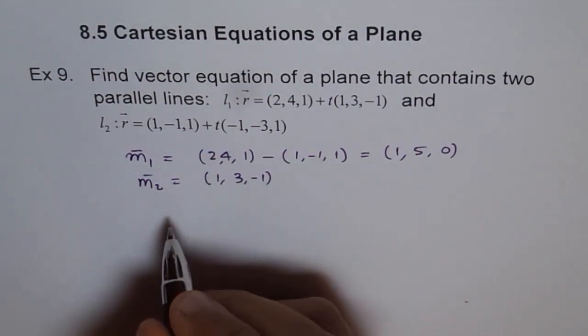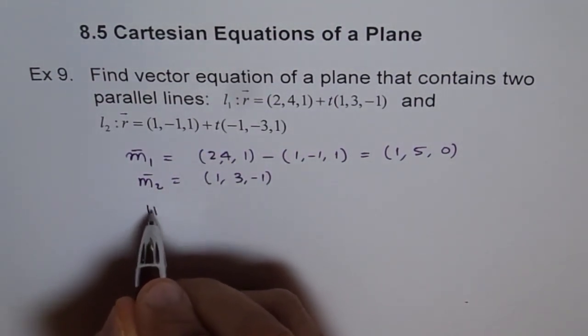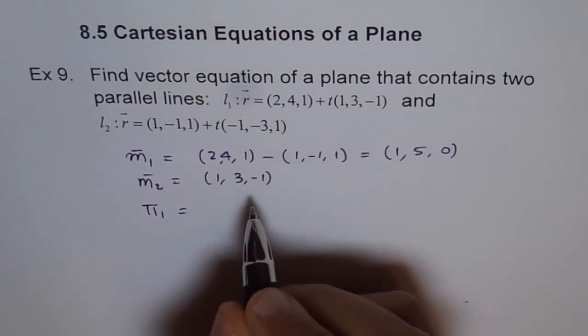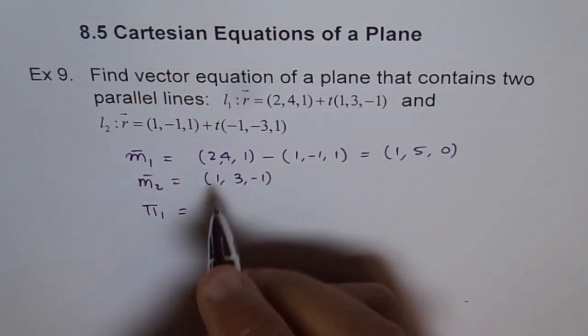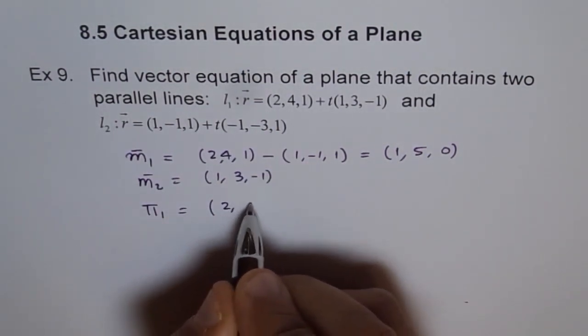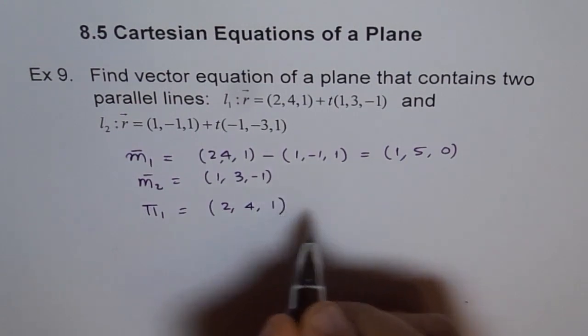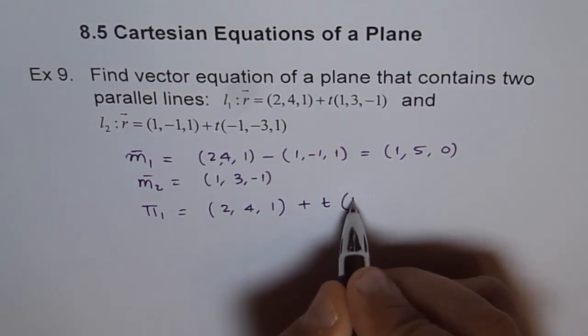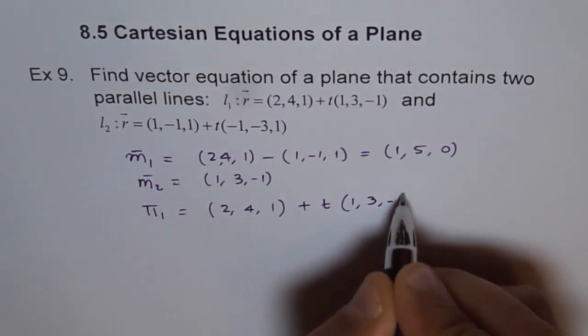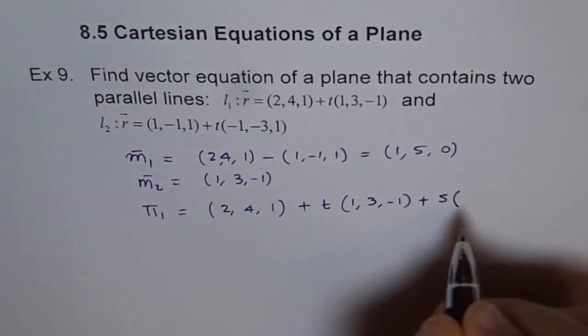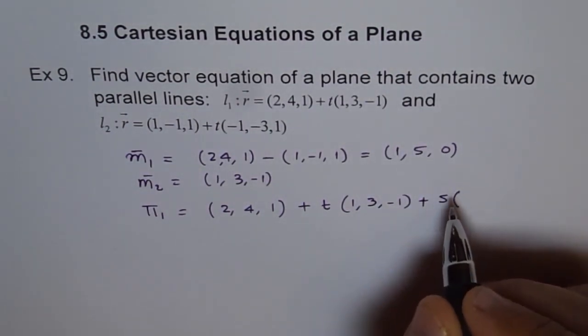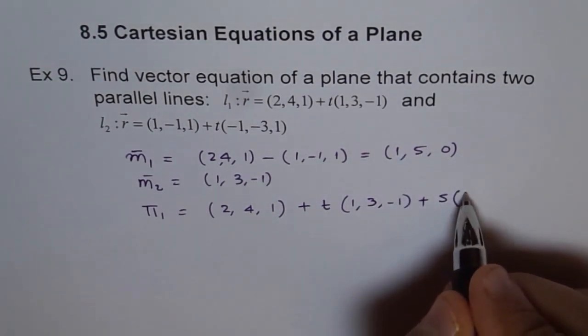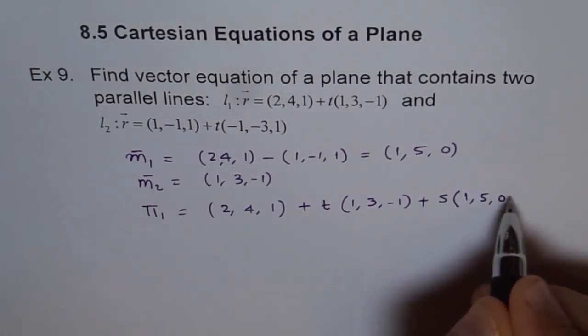And now we can write our plane. So plane representing will be, you can choose any one of these points. Let's say 2,4,1 is our point. Plus t times 1,3,-1 plus s times the other one which is 1,5,0.